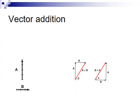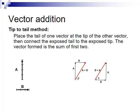There are several methods for adding vectors. The first one is called the tip-to-tail method. Simply place the tail of one vector at the tip of the other, then connect the exposed tail to the exposed tip as such. As you can see, adding a to b or b to a makes no difference.